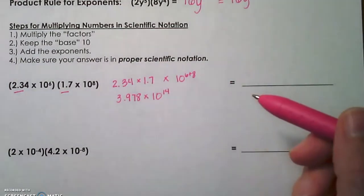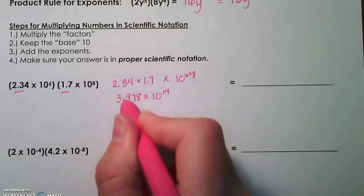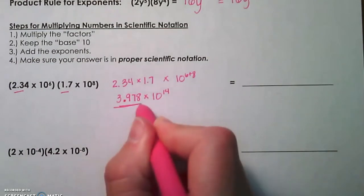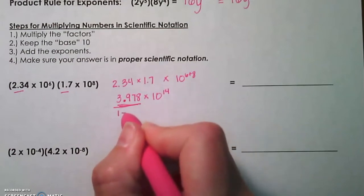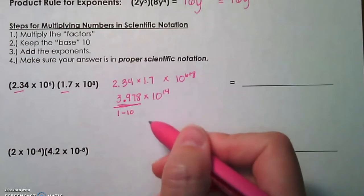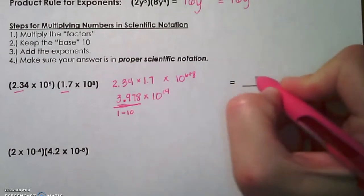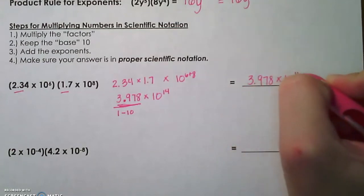The last step says make sure your answer is in proper scientific notation. Remember, proper scientific notation—that factor that we are multiplying by the power of 10 has to be between 1 and 10, or greater than 1 and less than 10. 3.978 is between 1 and 10, so our final answer is 3.978 times 10 to the 14th.